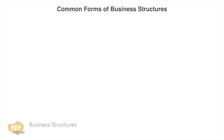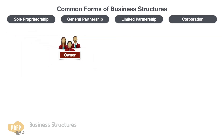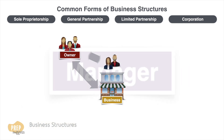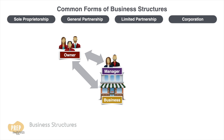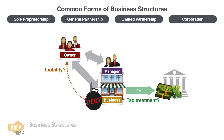In this first lesson, we shall learn the four more common forms of business structures: the sole proprietorship, general partnership, limited partnership, and corporations. We shall focus on four key aspects: the legal relationship between the owners and the business, the relationship between the owners and those who operate the business, the extent to which the owners are liable for the actions and debts of the business, and the tax treatment of profits or losses generated by the business.